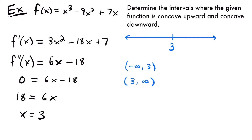Now we're going to test values between these endpoints of our intervals on the second derivative to see if the second derivative at those points is positive or negative, and that's going to help us determine whether our function is concave up or concave down. Let's pick a value between negative infinity and 3. I'm going to pick 0, so I have f double prime of 0, and that's going to be equal to 0 times 6, which is 0, and then minus 18 will be negative 18. That is a negative value, so our function is concave downward.